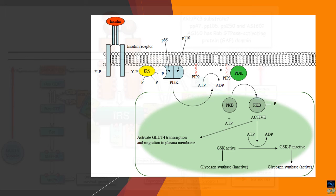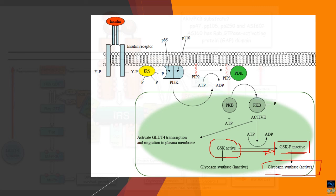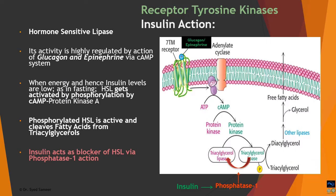Another arm of insulin action involves regulating GSK3-beta activity. GSK — glycogen synthase kinase — phosphorylates glycogen synthase. Under the influence of insulin, GSK3-beta is converted to its phosphorylated, inactive form. When GSK3-beta is inactive, glycogen synthase remains in an active state, so more glucose taken up is converted to glycogen. Thus insulin — via protein kinase B — inactivates the kinase that normally suppresses glycogen synthase.